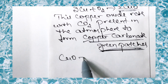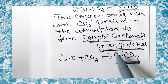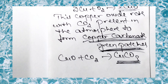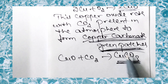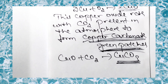Copper oxide reacts with carbon dioxide to form CuCO₃ (copper carbonate), which is green in color. These are the three examples of corrosion — rusting of iron, blackening of silver, and green patches on copper — that you need to study for the exam.